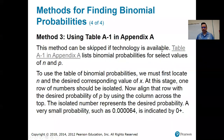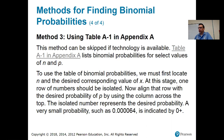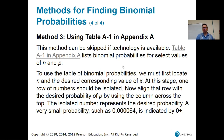Continuing with section 5.2, we're talking about different methods for finding binomial probabilities. The first one we talked about was using the formula, the second one was using technology — I showed you the Excel formula. So the third method is to use this table.